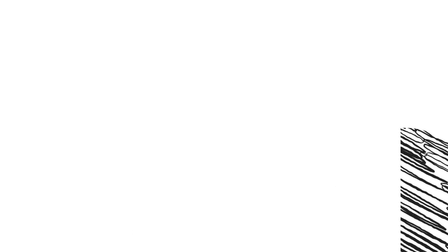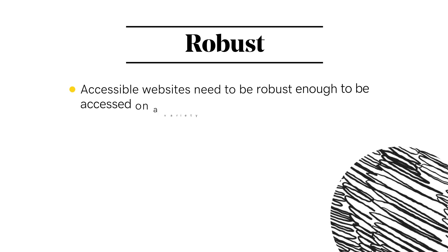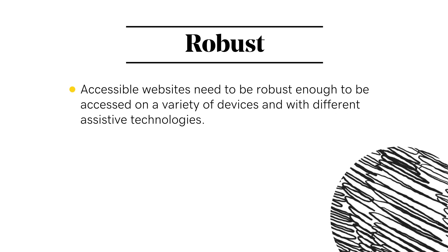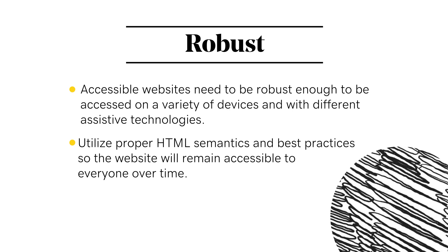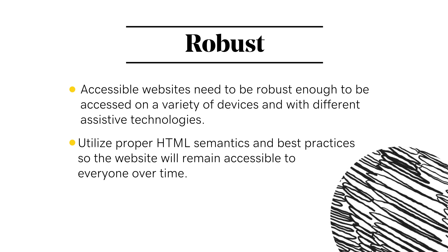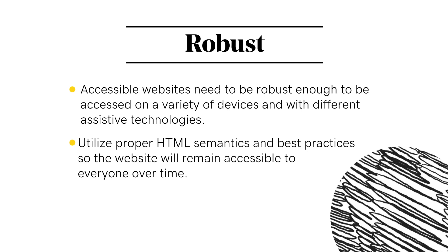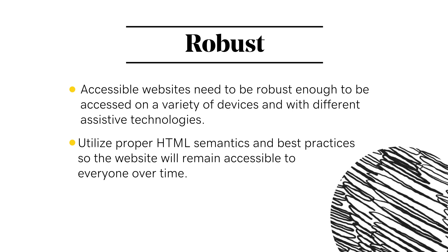The last letter in the POUR acronym stands for Robust. Accessible websites need to be robust enough that they can be accessed on a variety of devices and with a variety of assistive technologies. Your website should utilize proper HTML semantics and best practices to display the content so that its foundation will hold up as technology — from browsers to operating systems to assistive technology — progresses, so that the website will remain accessible to everyone over time.